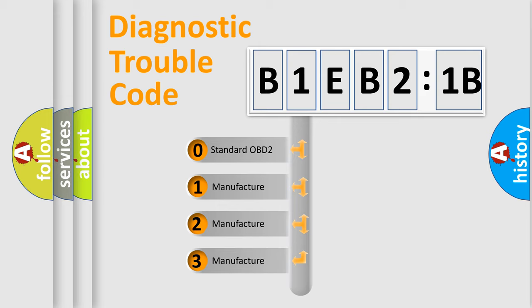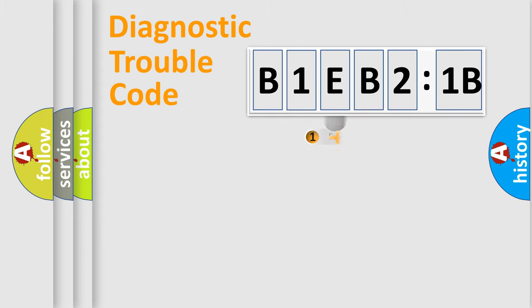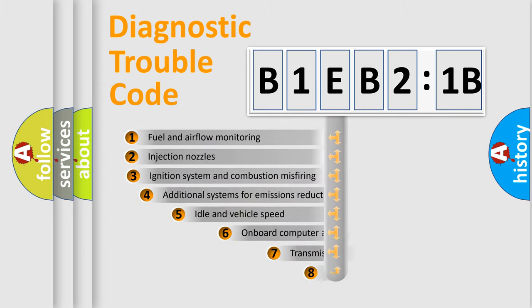If the second character is expressed as zero, it is a standardized error. In the case of numbers 1, 2, 3, it is a more specific expression of the car-specific error.